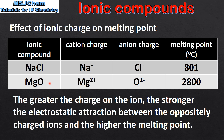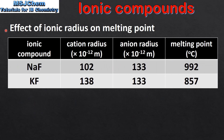This explains why magnesium oxide, with the higher charge on the ions, has the higher melting point. Finally we look at the effect of ionic radius on melting point. We have two ionic compounds: sodium fluoride and potassium fluoride. The sodium ion has a smaller ionic radius than the potassium ion because the potassium ion has more occupied energy levels.